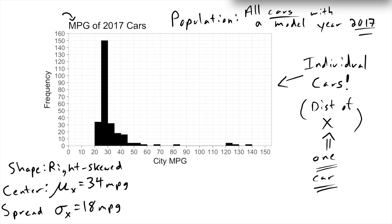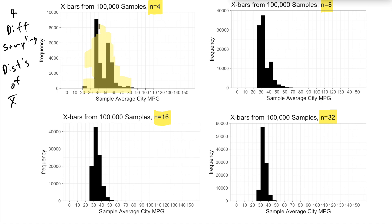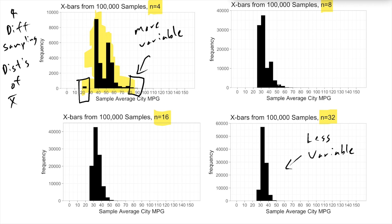As a reminder of what just happened: we started out by looking at miles per gallon of individual cars and noticed that distribution was highly right skewed, with a mean of 34 miles per gallon and a standard deviation of 18. Then we looked at what happened as we took a bunch of samples and looked at the sampling distribution of x-bar. These distributions become more normal and also less variable. By the time you get to samples of size 32 cars, it's pretty unlikely you'd randomly select 32 cars and have an average miles per gallon as high as 80. Increasing the sample size decreases the variability of x-bar.